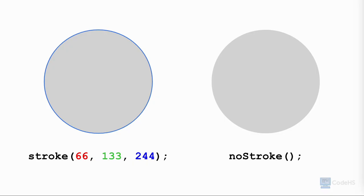We can also change the color of the borders of shapes. The stroke function sets the color used to draw lines and borders around shapes. All shapes drawn after the stroke function will have borders with the stroke color. We can pass a predefined color, grayscale value, or RGB value to the function. The noStroke function disables drawing the stroke, so all shapes drawn after it will not have a border.